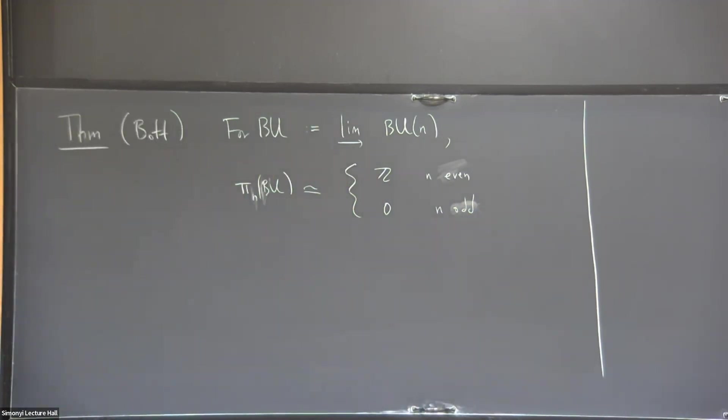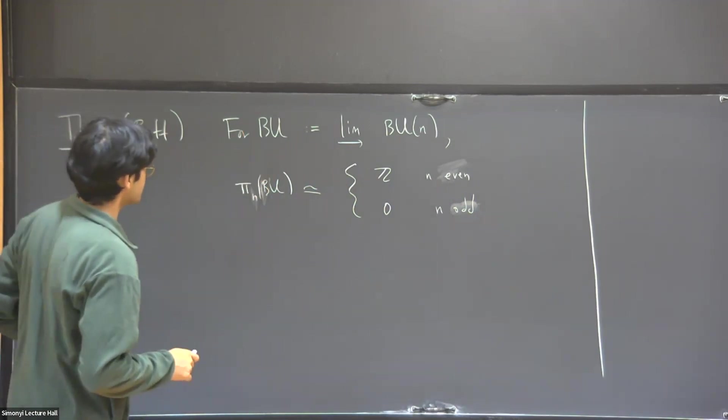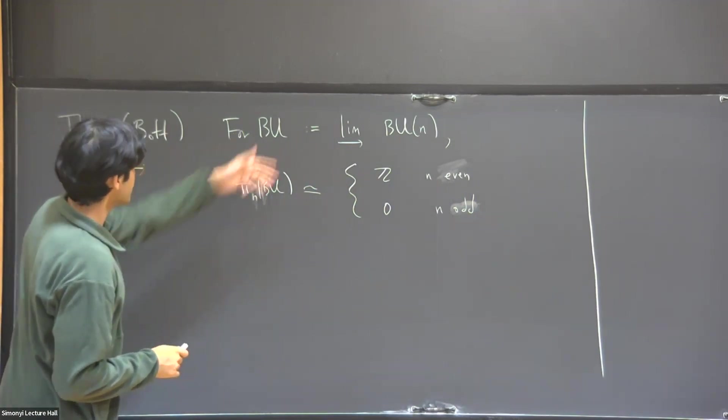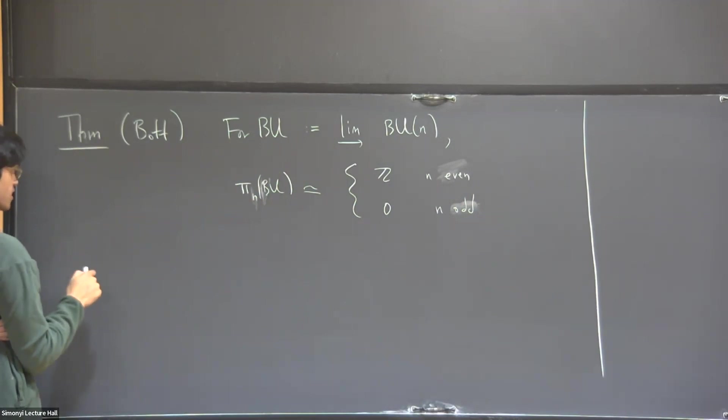So the homotopy group is Z when n is even and positive and zero when n is odd. So that's the theorem, and let me say something about what this space is.